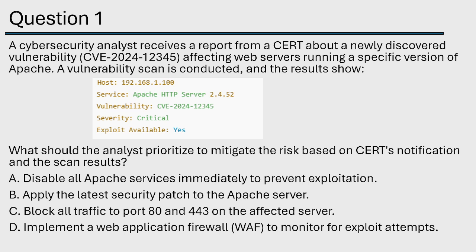We know the question. Whenever you're looking at a type of question like this, make sure that you're reading what the question is actually asking. In this case, what should the analyst prioritize to mitigate the risk based on the CERT notification and the scan results? We can see here that we're running host 192.168.1.100, Apache HTTP server 2.4.52. It gives us a vulnerability number, but it does say that the severity is critical and that there is, in fact, an exploit available.